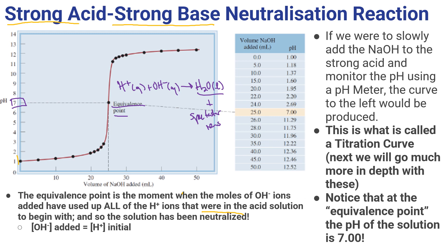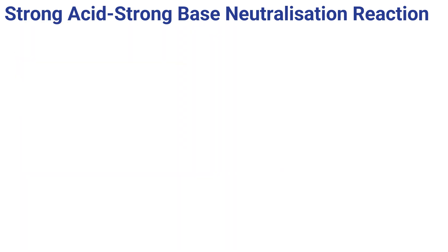It's a very important moment that you know going forward: the equivalence point represents the moment — the equivalence point — that I've added enough titrant, in this case base, to eat up all of the original sample, to fully react, to fully push that sample to completion. However much OH I've added, I must have had that amount of HA — for a strong acid that's also the H+ — originally. We're going to use those equivalence points to calculate how much of the unknown solution we had.